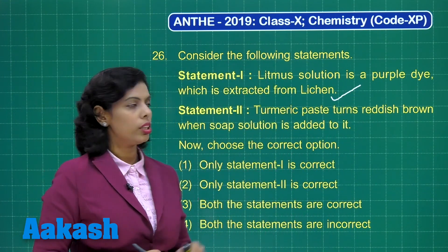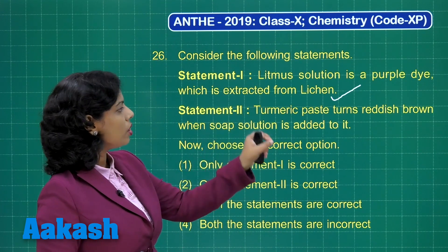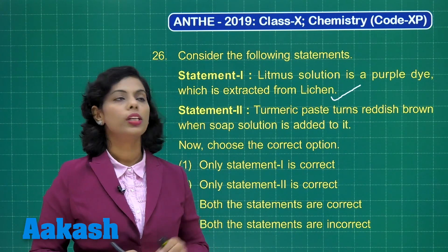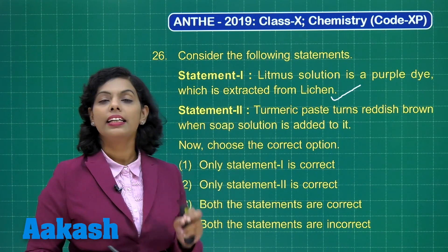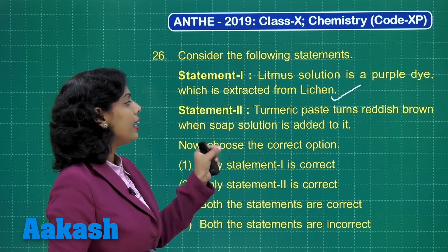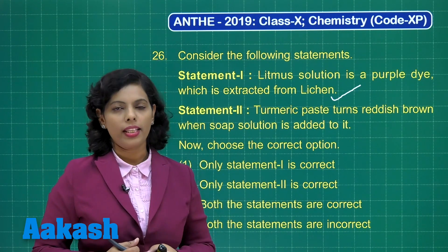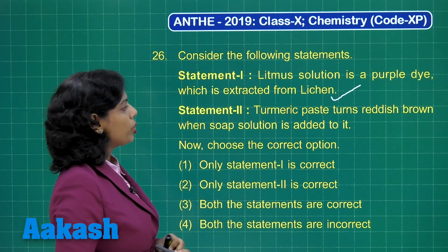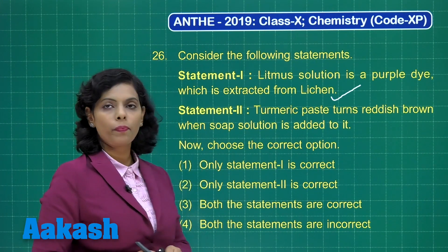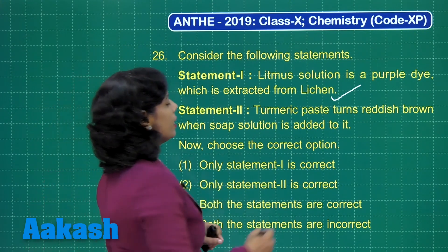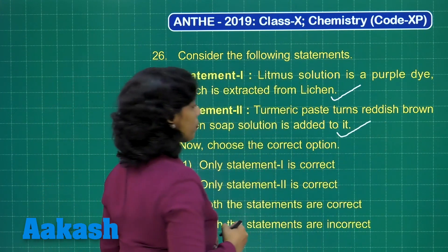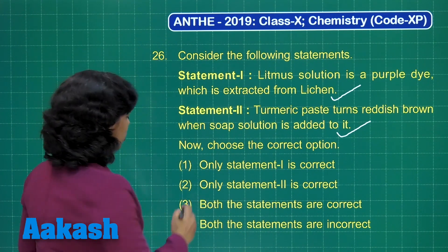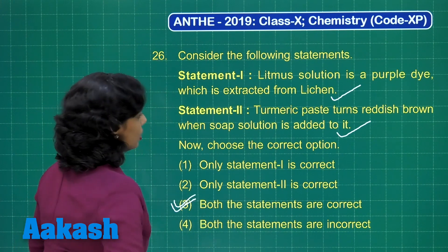Statement 2: turmeric paste turns reddish brown when soap solution is added to it. Turmeric paste is a natural indicator, and if you add it to soap solution — which is alkaline, basic in nature — there is definitely a formation of reddish brown color. So this statement is also correct. Both statements are correct, so we can easily choose option 3 as the correct answer.